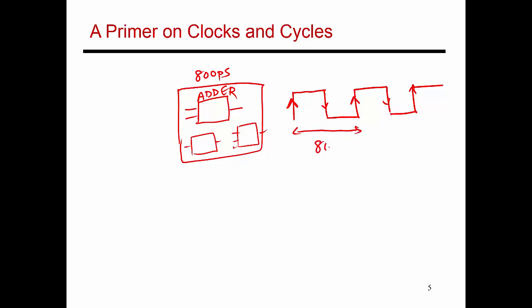So these two rising edges are separated by 800 picoseconds, and I'm essentially giving that adder enough time to get its math done. So in this example, how many add operations can I perform in one second? It's basically the number of rising edges that I'm going to observe in one second.